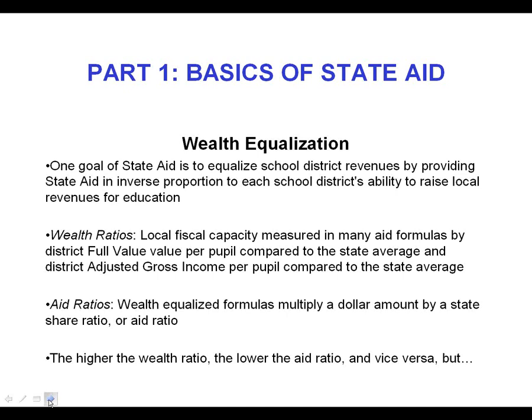So the higher your wealth ratio, the wealthier you are in relation to the state average and the less state aid you would receive. Some of our major aids incorporate this wealth ratio concept: building aid, transportation aid, BOCES aid. At the beginning of all the output reports for those aids, you will see the calculation of an aid ratio that starts with the calculation of a wealth ratio. You will see full value and then a denominator pupil count. The pupil count may vary, but it is the same concept each time you see the calculation of an aid ratio.